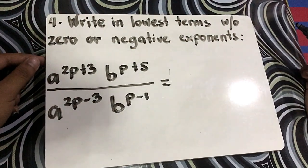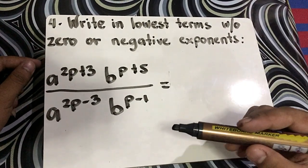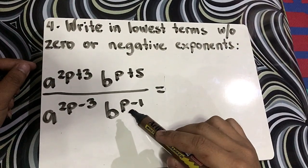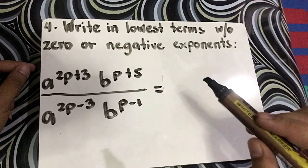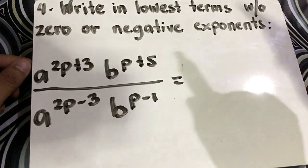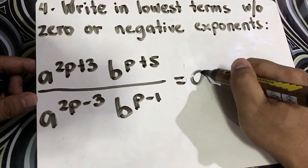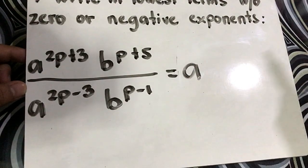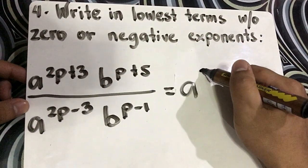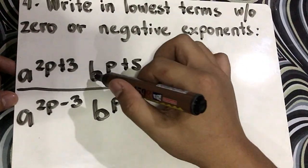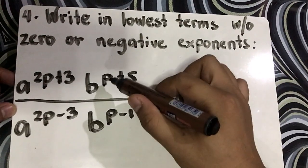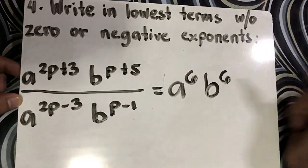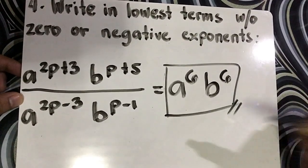Write in lowest terms without zero or negative exponents: a raised to 2p plus 3, b raised to p plus 5, all over a raised to 2p minus 3, b raised to p minus 1. By laws of exponents with same bases, copy the base and subtract the exponent. For a: 2p minus 2p is 0, so we don't write it; 3 minus negative 3 is 6. For b: p minus p is 0; 5 minus negative 1 gives 6. So the final answer is a raised to 6, b raised to 6.